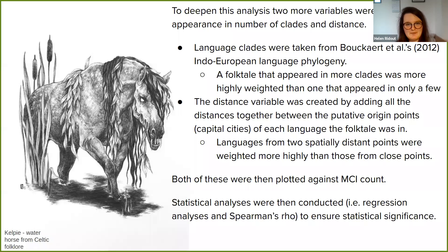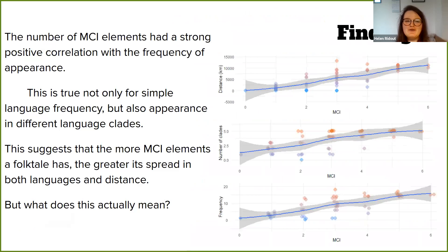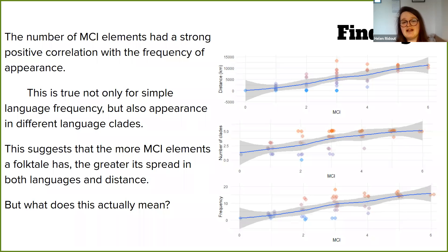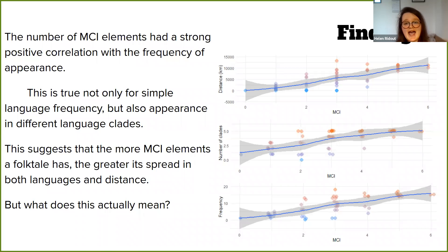My results were actually quite simple. It showed that the number of MCI elements had a very strong positive correlation with the frequency of appearance in languages. This was not only true for the simpler language frequency measure, but also for appearance in different language clades and over distance. Overall, this suggests that the more MCI elements a folktale has, the greater its spread both linguistically and geographically.